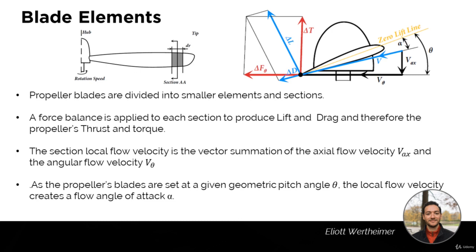In blade element theory, propeller blades are divided into smaller elements and sections. A force balance is applied to each section to produce lift and drag, and by adding everything up together for all the blades we calculate the propeller's thrust and torque. The section local flow velocity is the vector summation of the axial flow velocity Vx — basically the forward velocity of the air the propeller sees, equivalent to V-disc in actuator disc theory — and the angular flow velocity Vθ derived from the rotational velocity of the propeller.